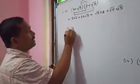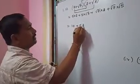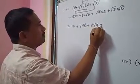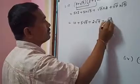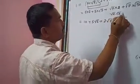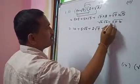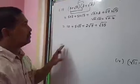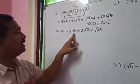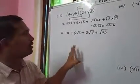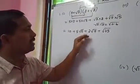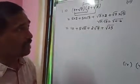So here, 5 into 2 is 10, plus 5 root 5. We can't simplify that. Then 2 root 7, plus root 7 into root 5. Using root A into root B equals root A times B, that gives root 35. Now, can we simplify any like terms? There are no root 5 or root 7 like terms, so this is the last simplified step: 10 + 5√5 + 2√7 + √35.